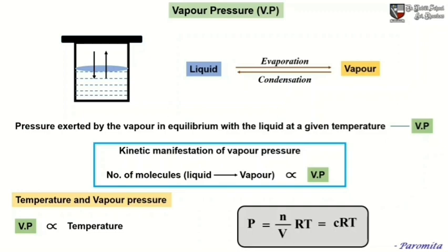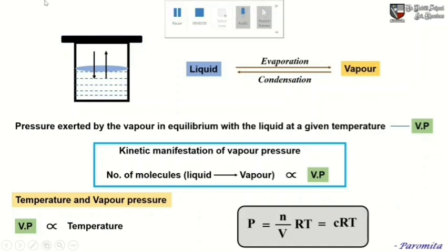A stage is reached when an equilibrium is established between the liquid and the vapor. At this point, the pressure exerted by the vapor in equilibrium with the liquid at a given temperature on the surface of the liquid is called the vapor pressure.